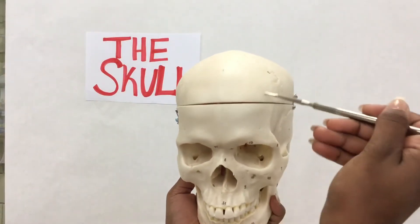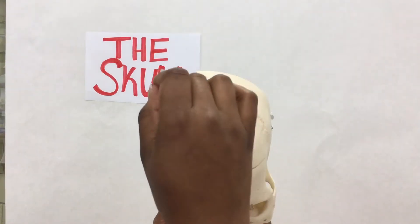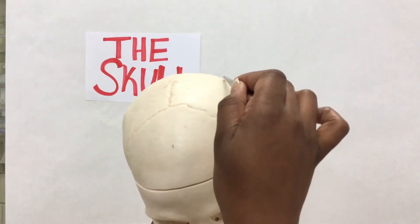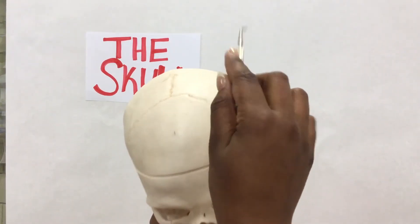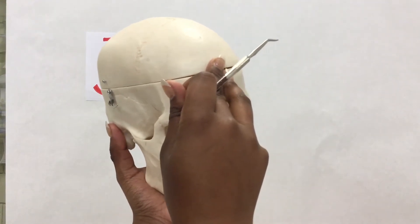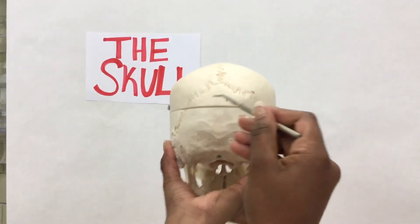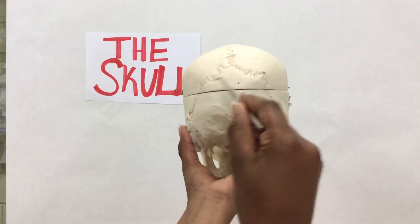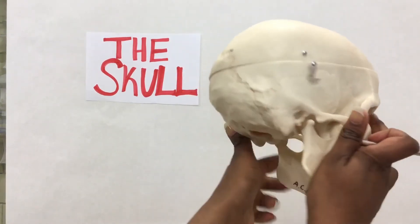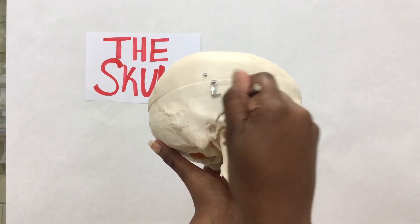This is the frontal bone. These are the parietal bones. This is the occipital bone. This is the temporal bone.